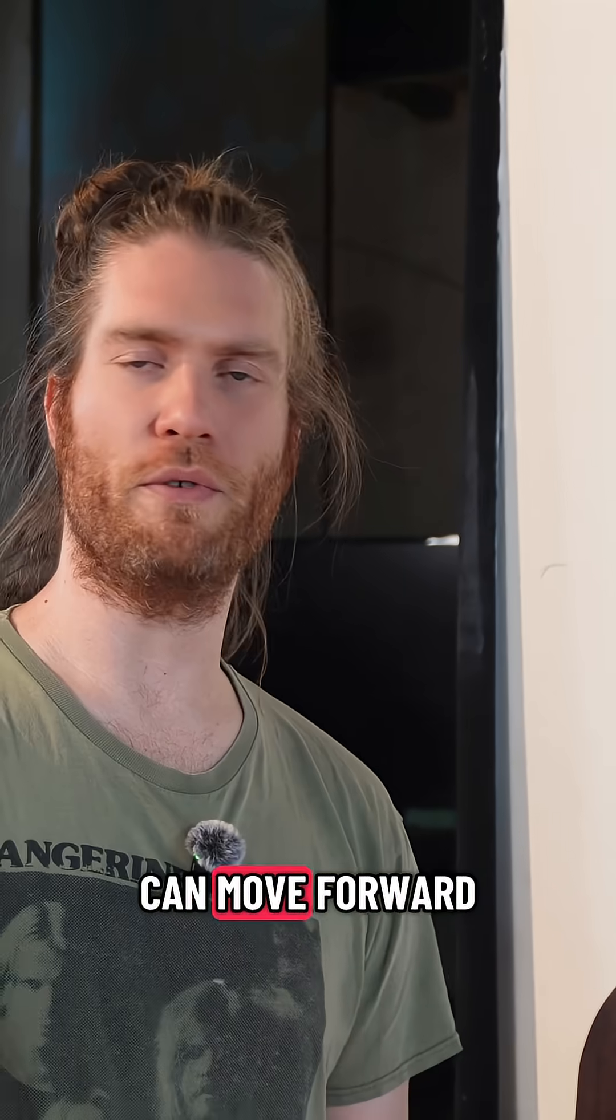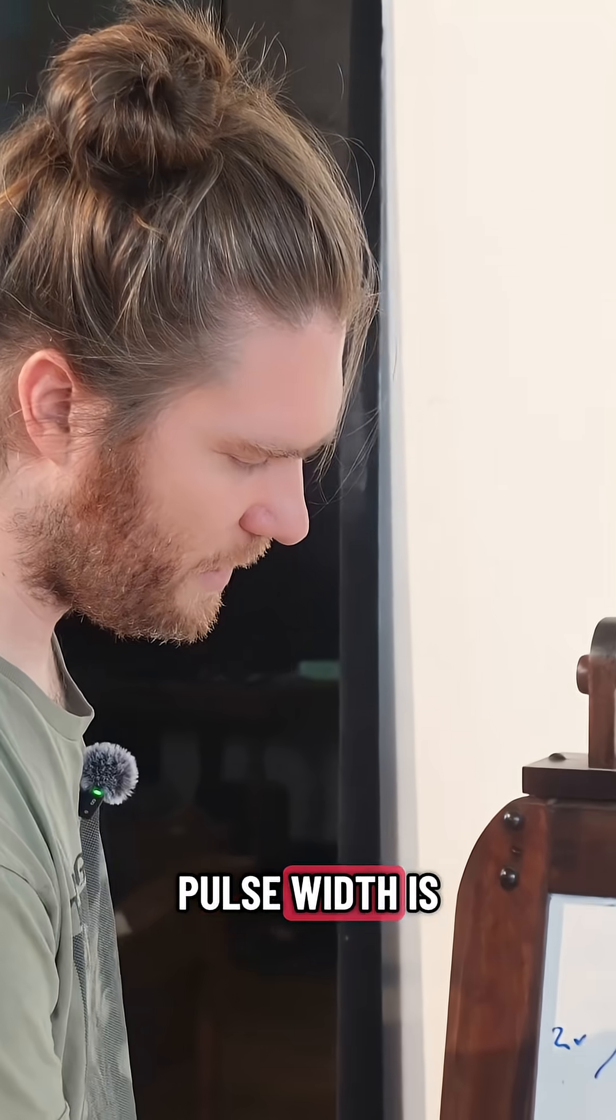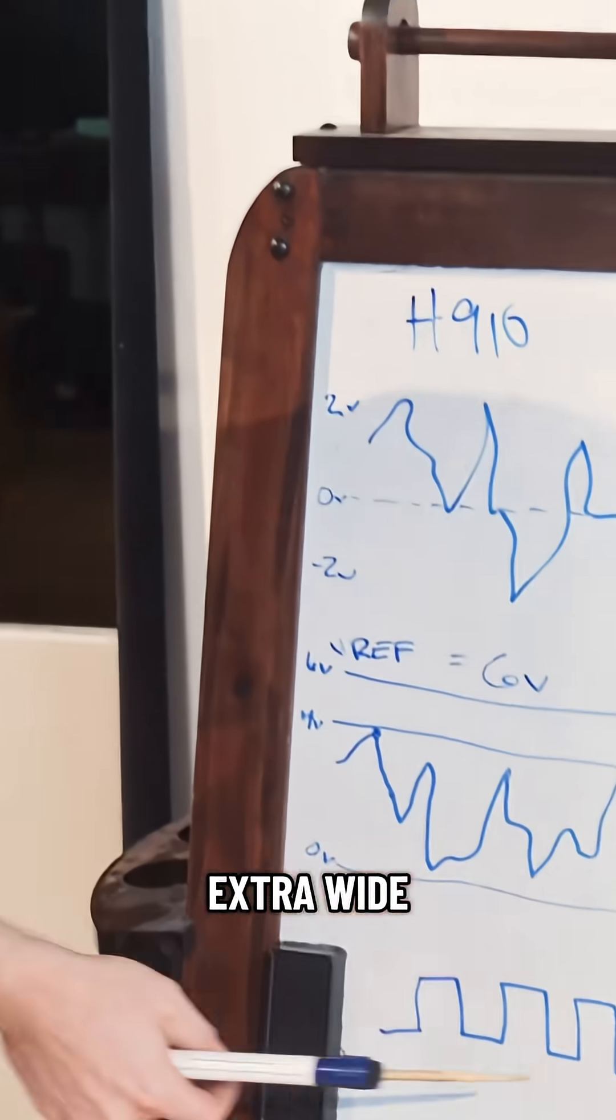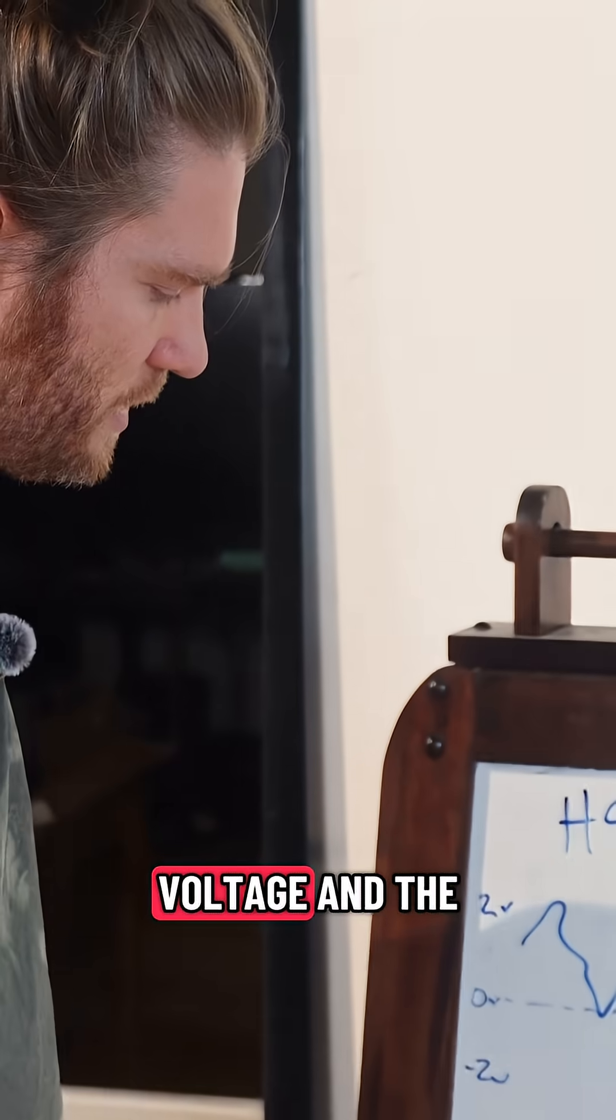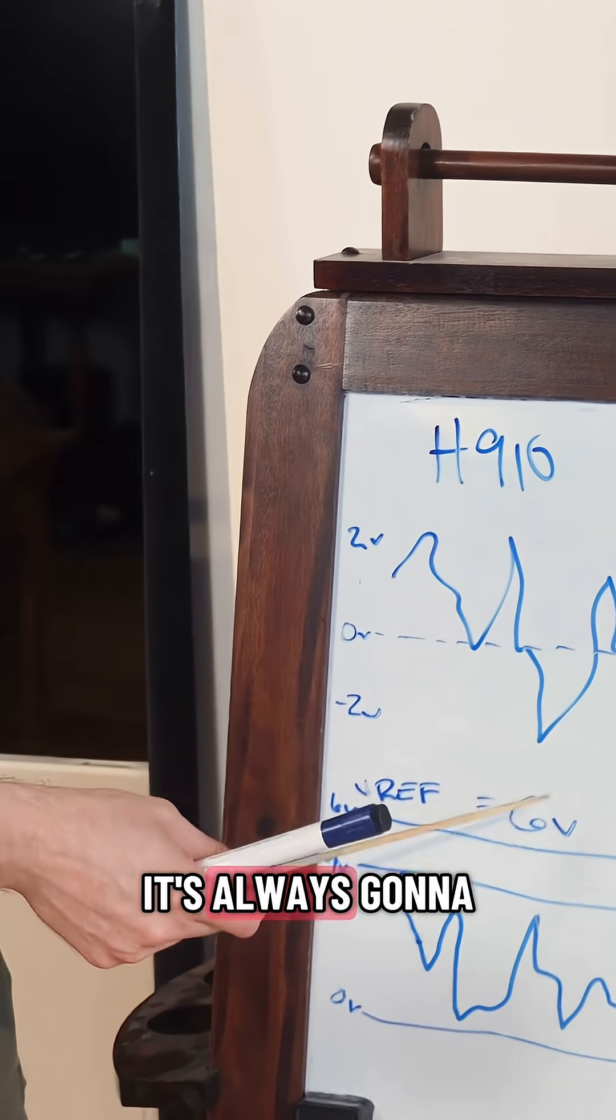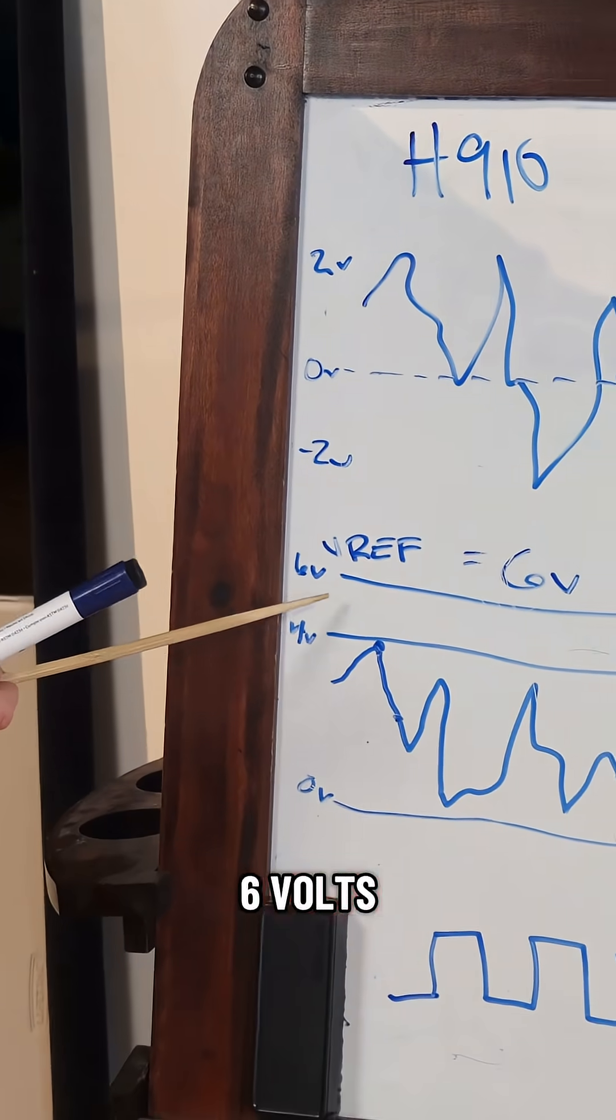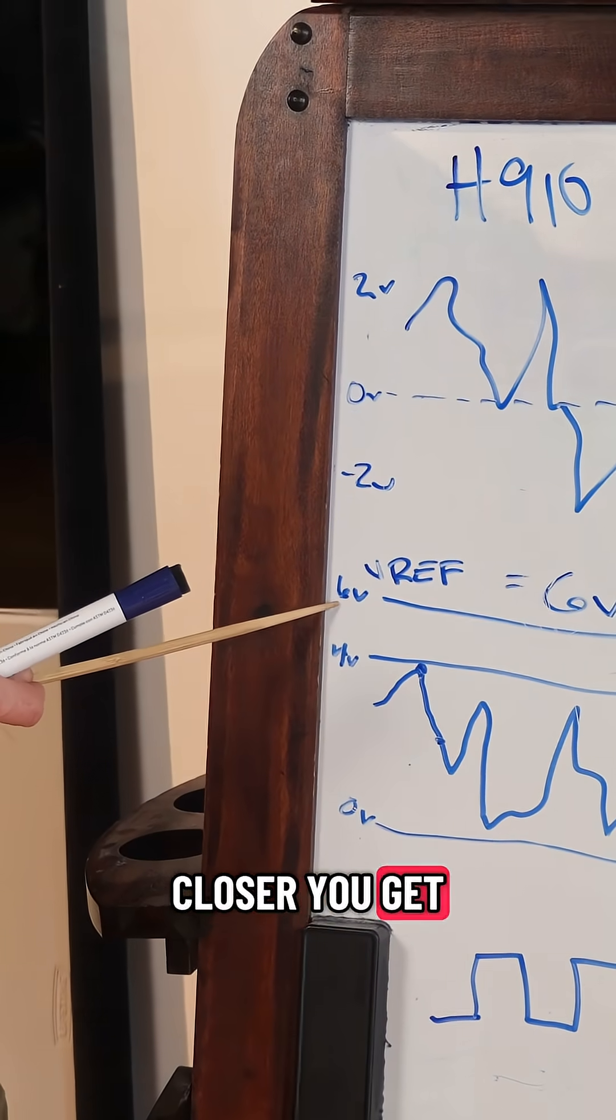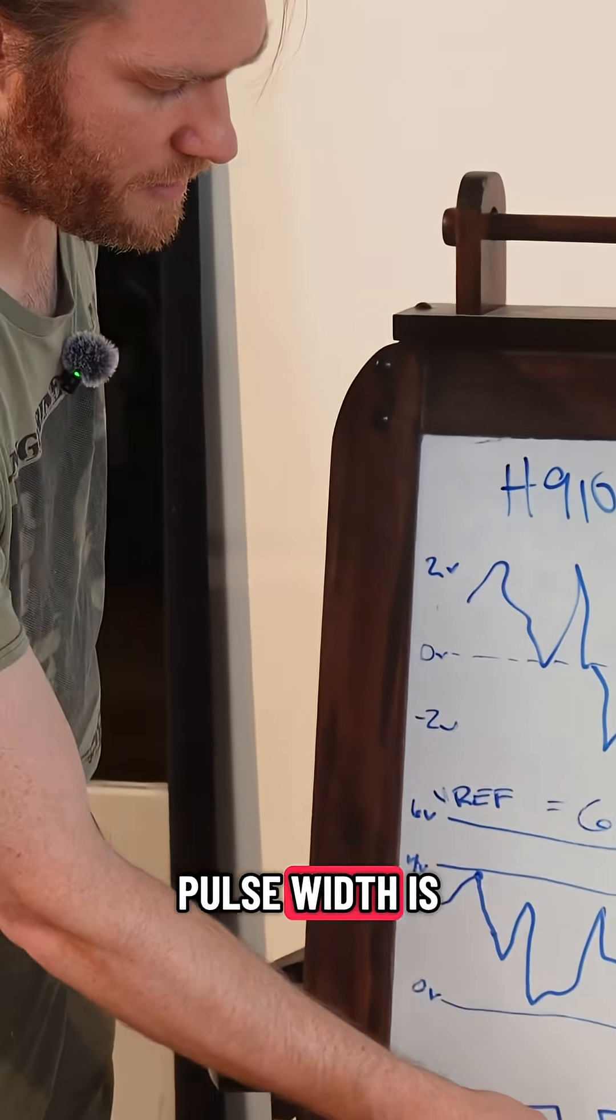So if the pulse width is extra wide, then that is represented by a higher voltage. V_ref never changes. The voltage reference never changes. It's always going to be 6 volts. So our audio signal is anywhere between 0 and 6 volts. And the higher you get, the closer you get to 6 volts with your audio signal, the wider the pulse width is.